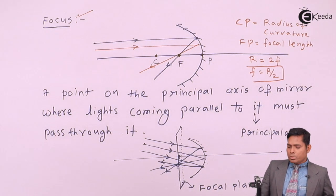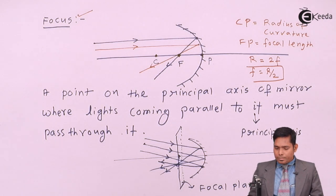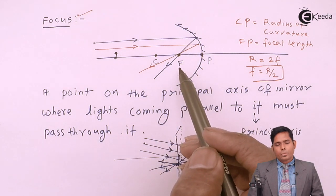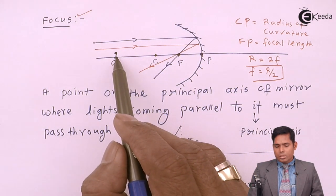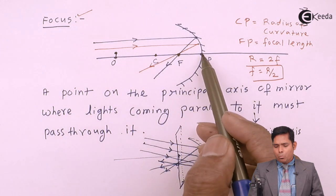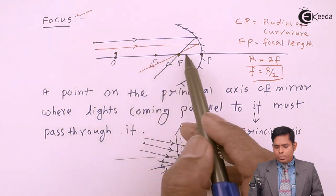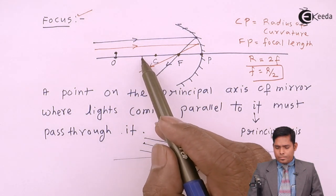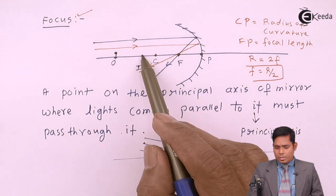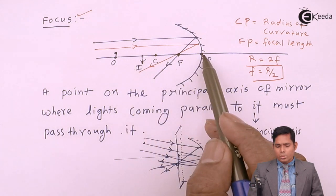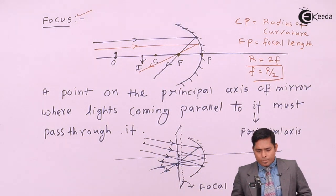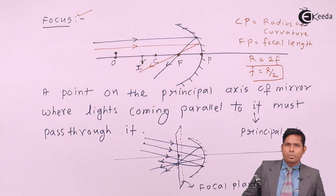We have now defined the main terms used in ray optics. If an object is placed in front of the mirror, the distance of the object is always measured from the pole of the mirror — this is the object distance, symbolized as U. If an image is formed somewhere, that distance from the pole is the image distance, symbolized as V. In the next video, we will discuss sign conventions.